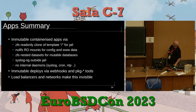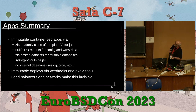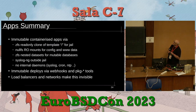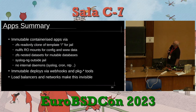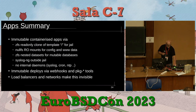App summary: immutable containerized apps using read-only ZFS clones, nullFS mounts, nested datasets, syslog to move logging out of the jail, no extra processes, and immutable deploys via webhook and package tools — with load balancers and networking making the whole process invisible.